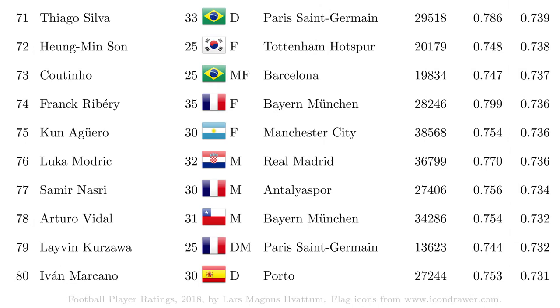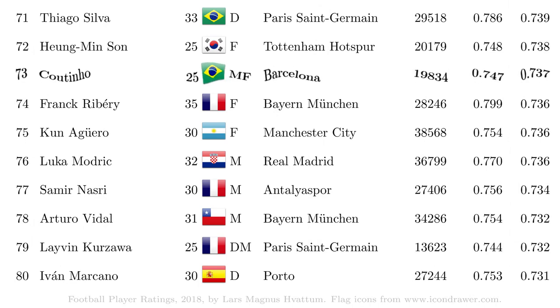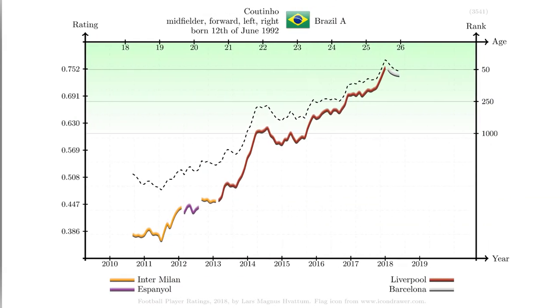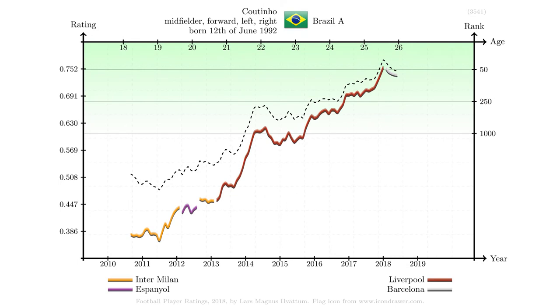At number 73 sits Coutinho. There are four players from Liverpool, his former team, currently ranked higher than him. There are also six players from Barcelona currently ranked higher than Coutinho.